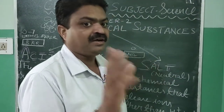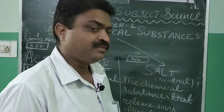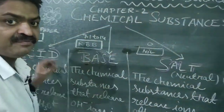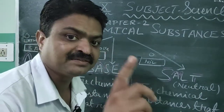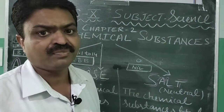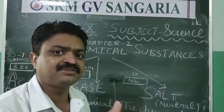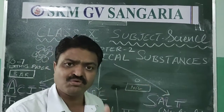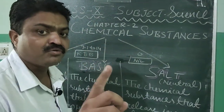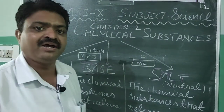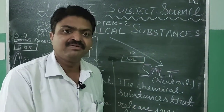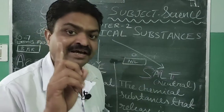Now what are acids? The word acid is generated from a Latin word, acidus. Acidus means sour. So the chemical substances that have a sour taste and release hydrogen or hydronium ions in the presence of water are known as acids.